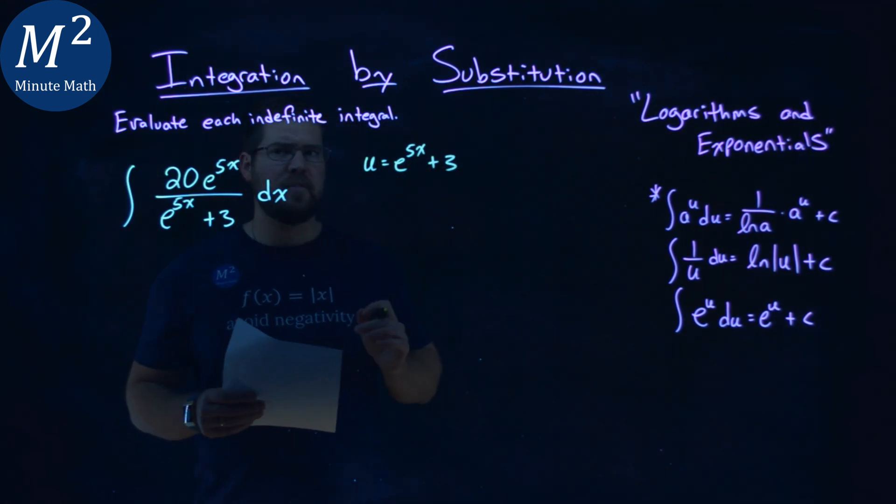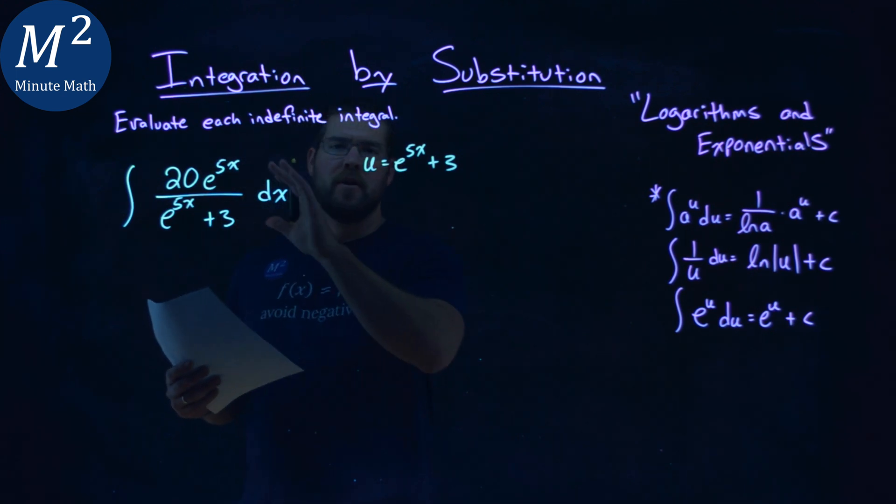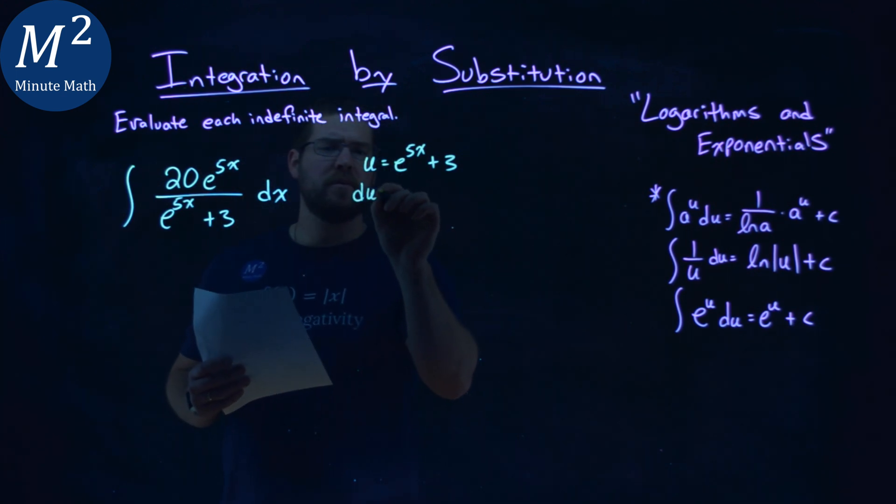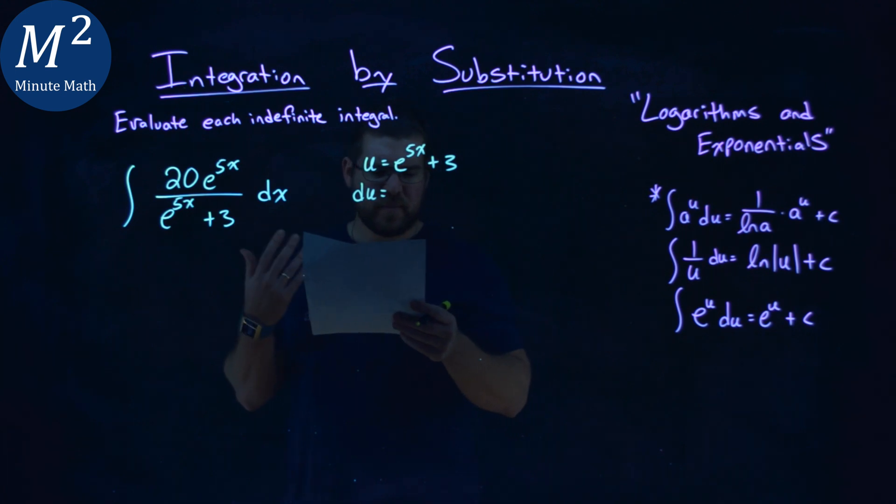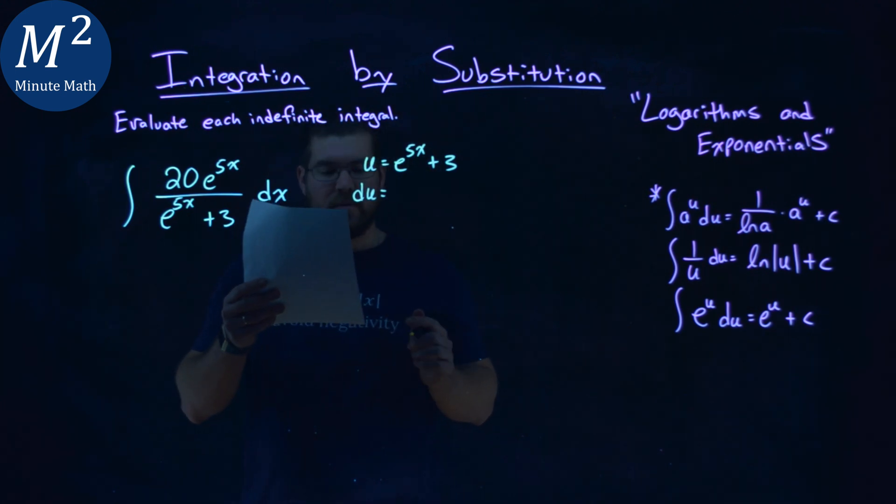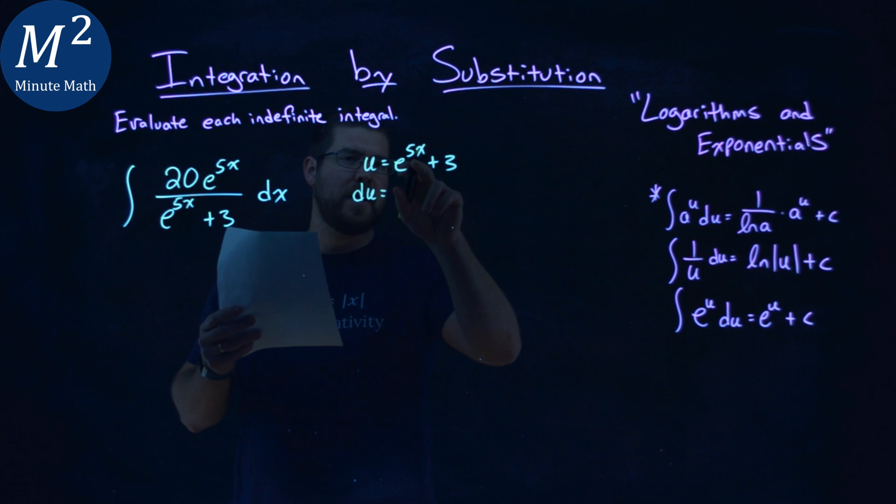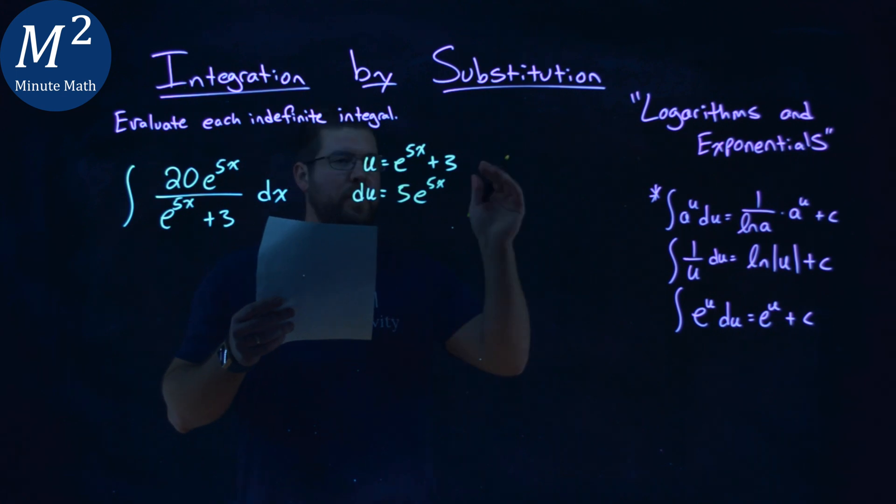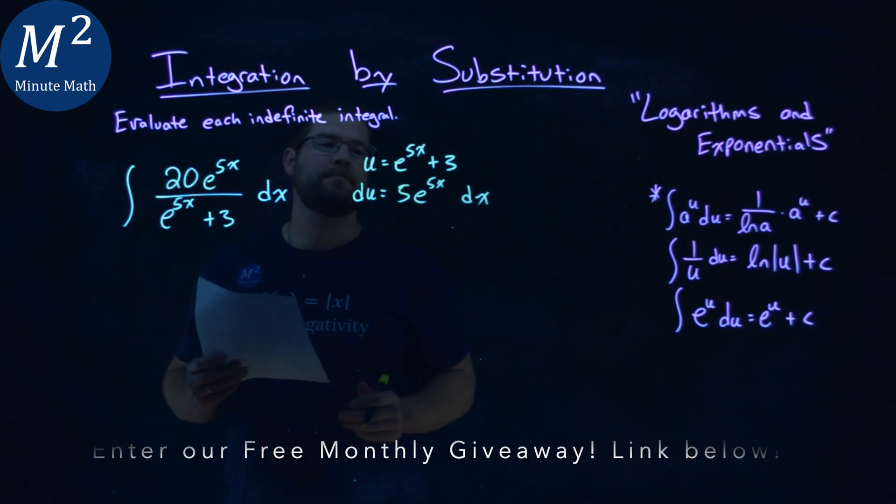Now we want to derive this and see if we can kind of shape our function here. So we have du, the derivative here of e to the 5x plus 3, derivative of the top part 5x is 5, then we have e to the u again, e to the 5x right there, don't worry about plus 3, and dx.